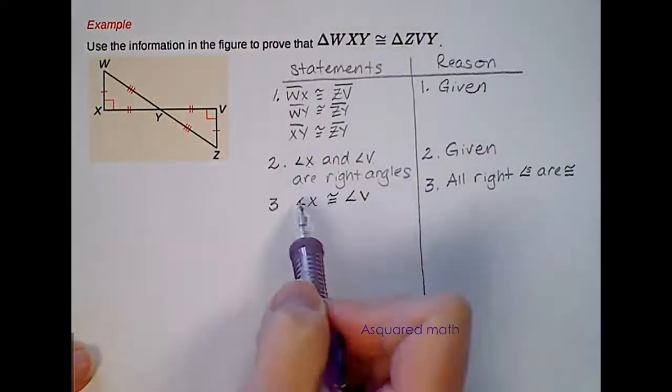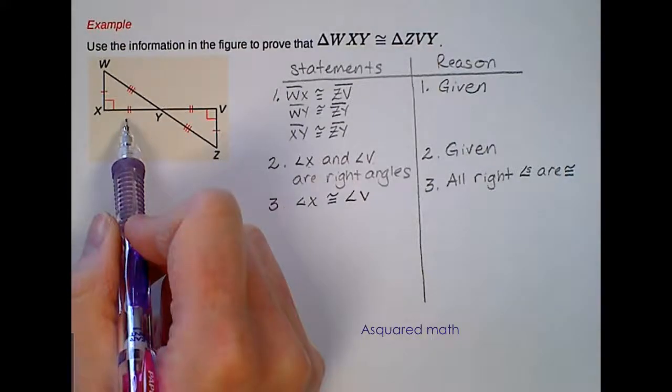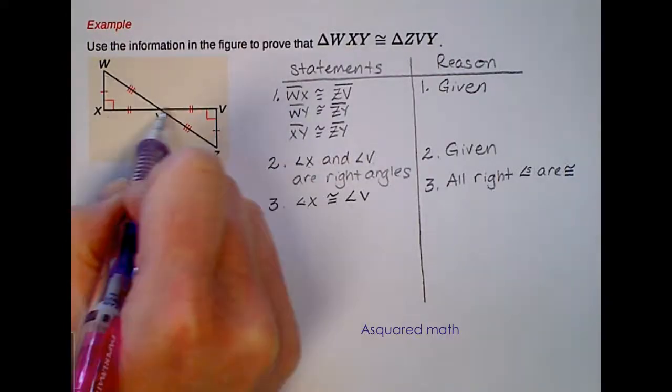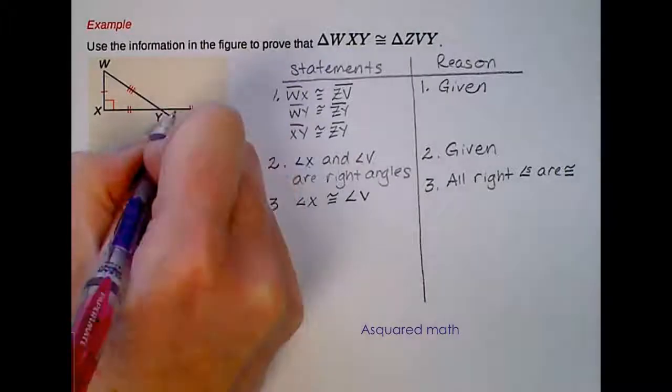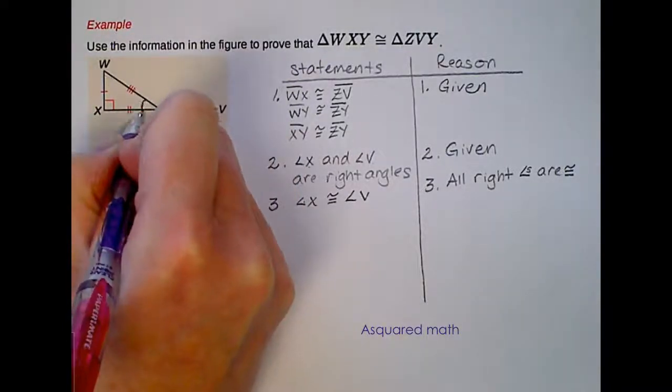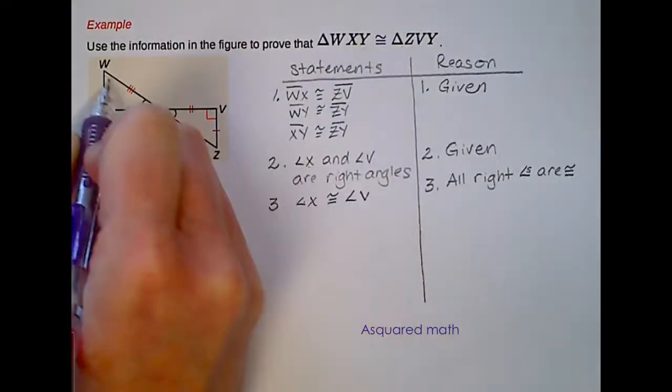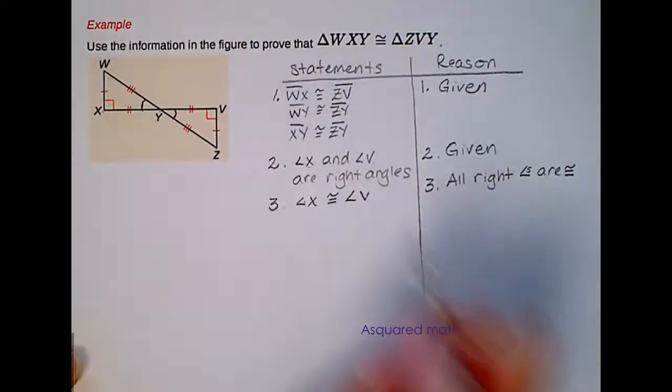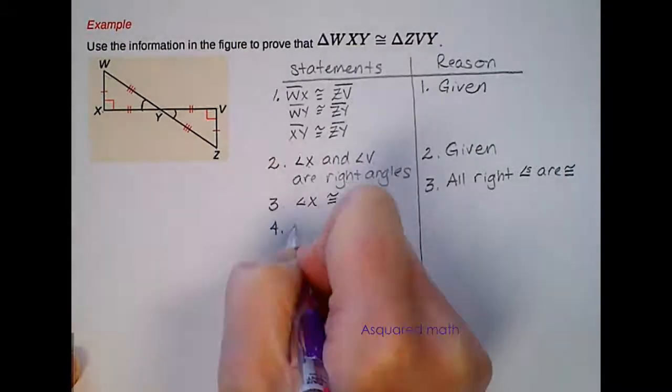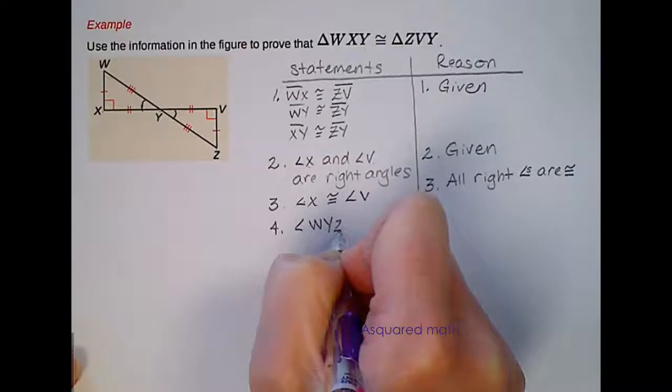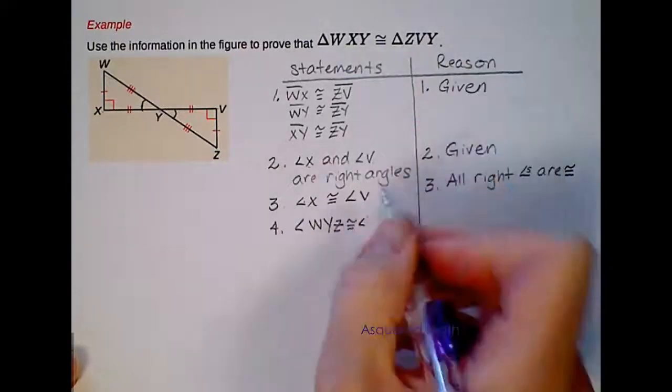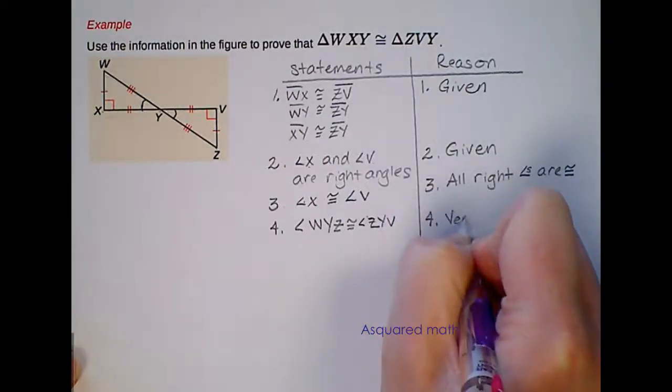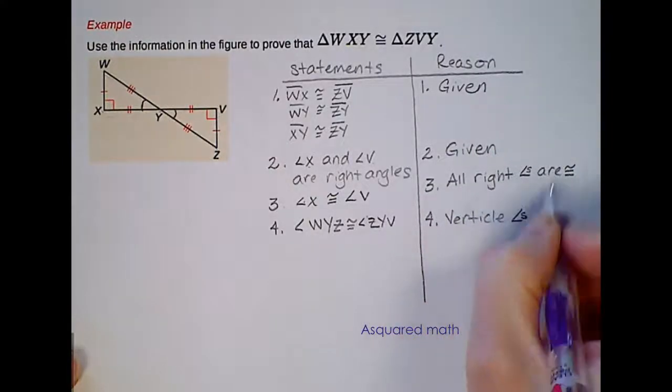Next, I'm done with all of the given information that's marked on this picture, so I need to figure out other things. We have two lines on this picture that intersect. Once we have intersecting lines, the angles, the non-adjacent angles, are congruent to each other. So angle WYX is congruent to angle ZYV. Let's go ahead and write that down. That angle WYZ is congruent to angle ZYV, and that is because of our vertical angles theorem.